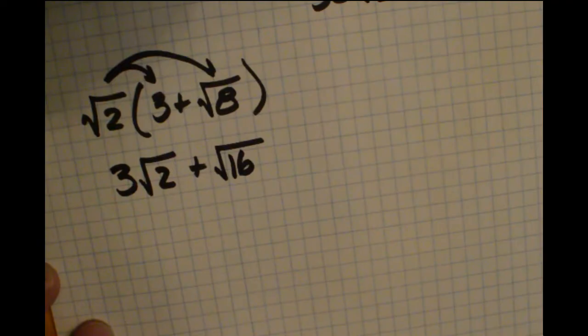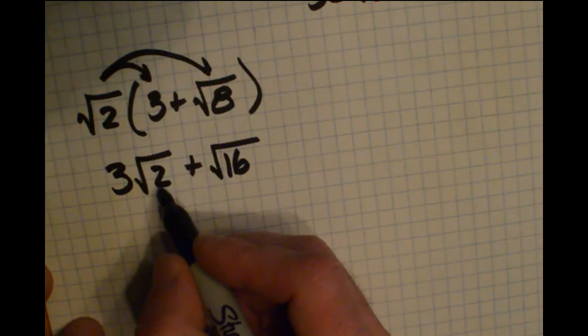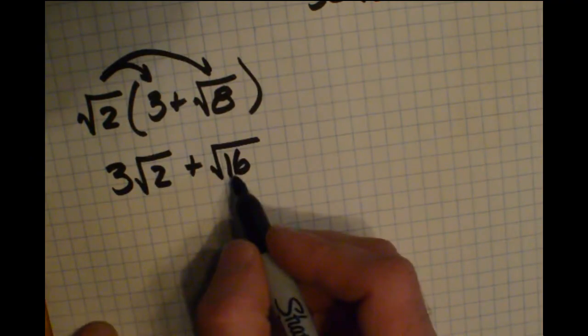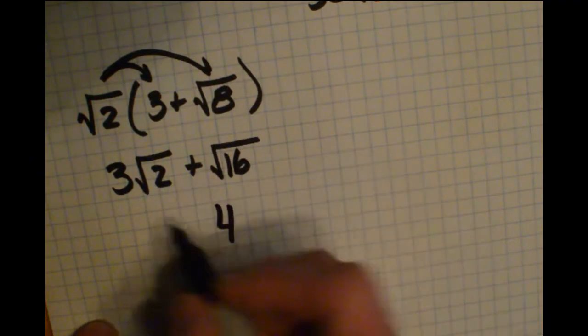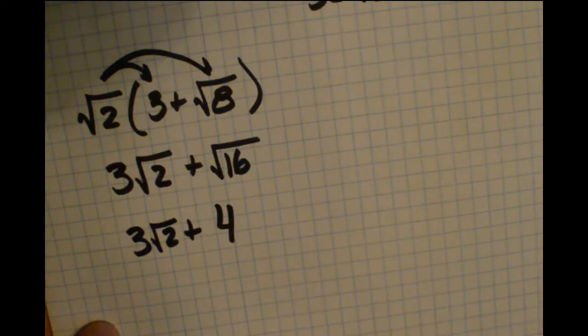Let's take a look at each of these radical terms and see if we can simplify them further. 3 radical 2 is as simple as it gets, but the square root of 16 is a whole number, just plain 4. When we simplify this together, we've got 3 radical 2 plus 4.